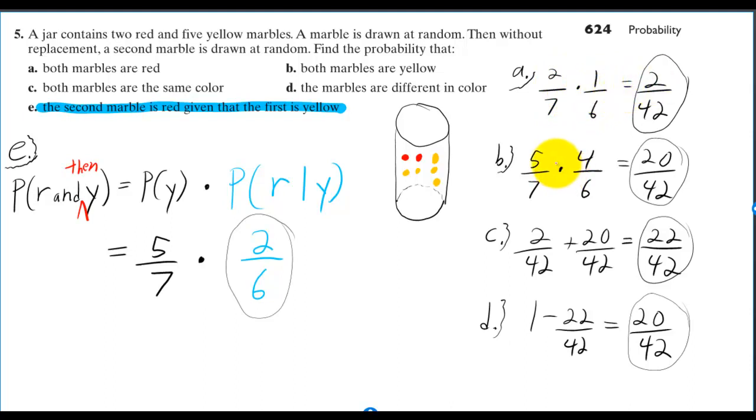If we want the probability that both marbles are yellow, there's first five yellow marbles out of the seven total. Then there's only four yellow marbles out of the now six total. You multiply those and you get 20 out of 42.